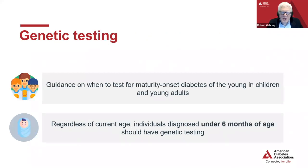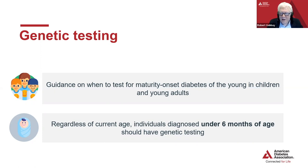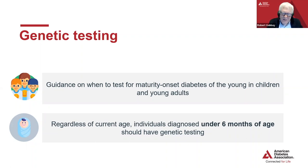We also focused on genetic testing and specifically guidance around when to test for maturity-onset diabetes of youth in children and young adults. Individuals with a family history suggestive of an autosomal dominant inheritance pattern should be genetically screened for MODY — maturity-onset diabetes of the young. And anybody, regardless of age, if they were diagnosed initially at six months or younger, should be genetically tested as well, because a number of these individuals can sometimes not require insulin and have other therapies.